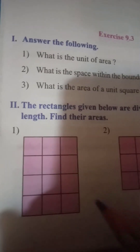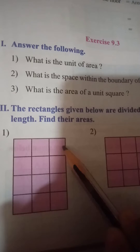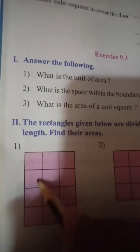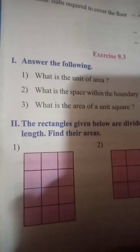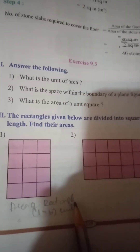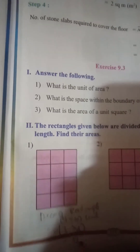A rectangle is divided into square units. The length is 3 units and breadth is 4 units. Area of rectangle equals length into breadth. Three fours are 12 — so the area is 12 square units.